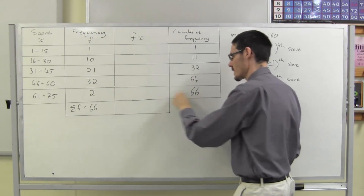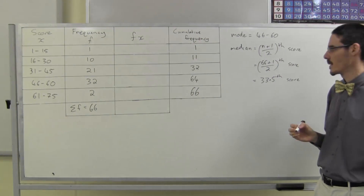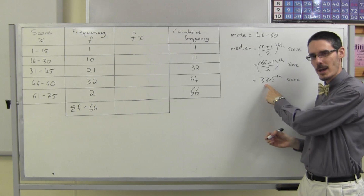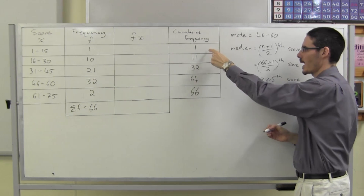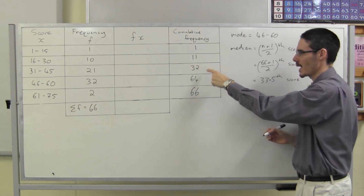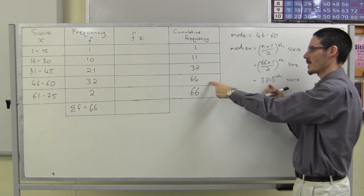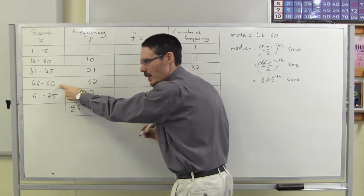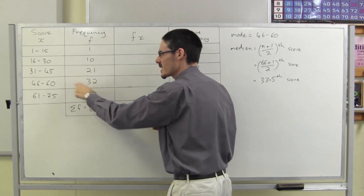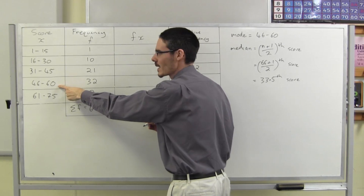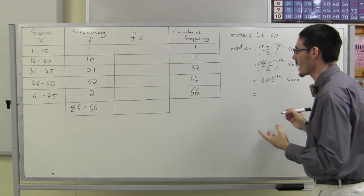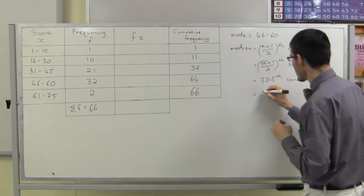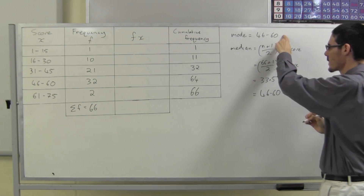Double check that you have the same numbers. The 33.5th score is halfway between the 33rd and the 34th scores. Both the 33rd and the 34th scores are in that group, but I don't actually know what they are. This is a shorthand that's actually hidden the original scores from me. So all I can say, again, is it's a median class — and the median class is 46 to 60. Same as it was for the mode.